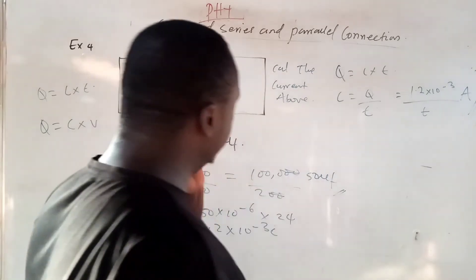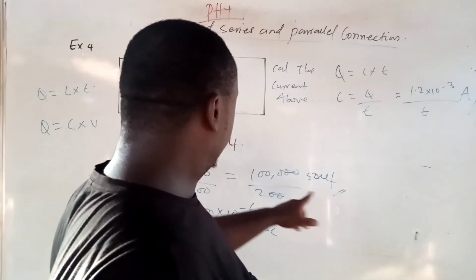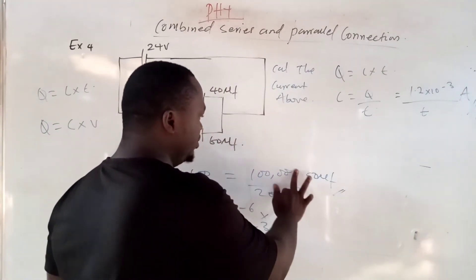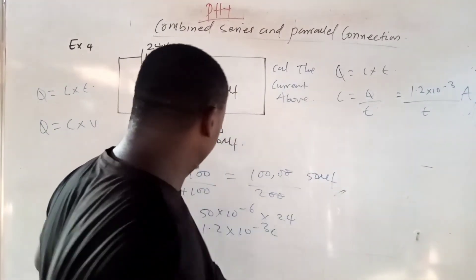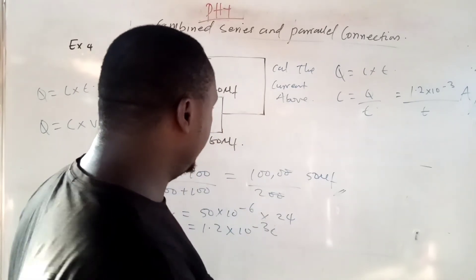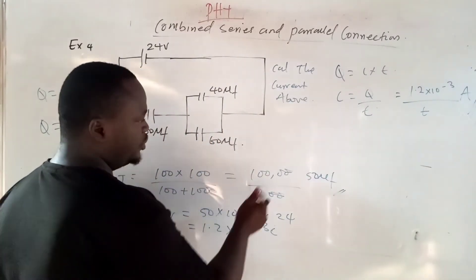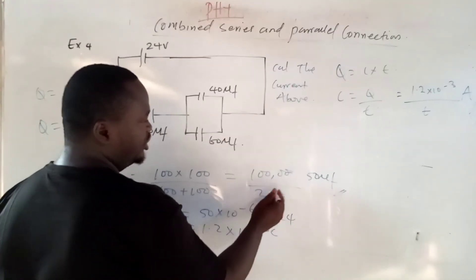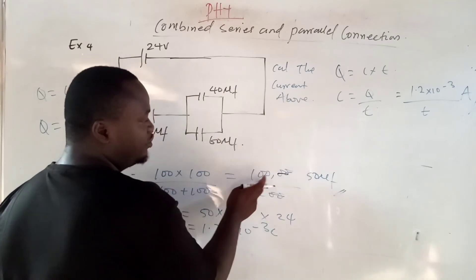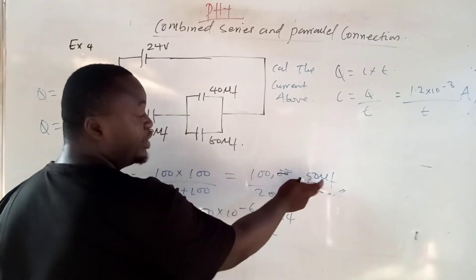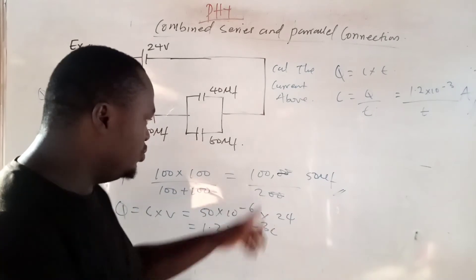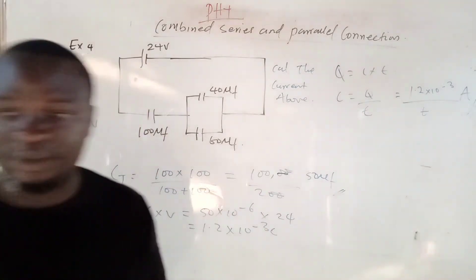I made a mistake earlier — that value is supposed to be 200, not 300. 100 times 100 is 10000; 10000 divided by 200 gives 50 microfarad. Do not forget about this correction.